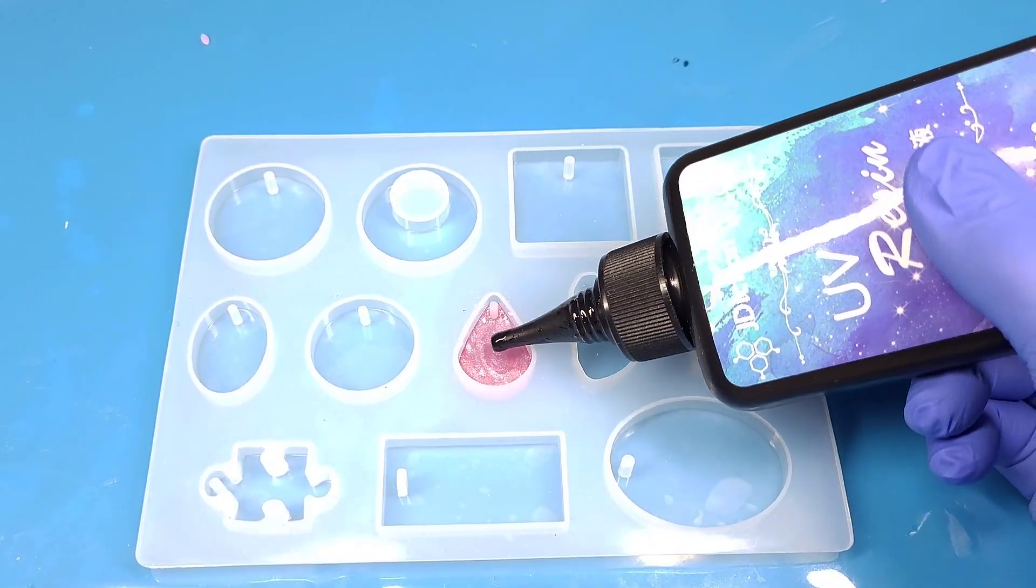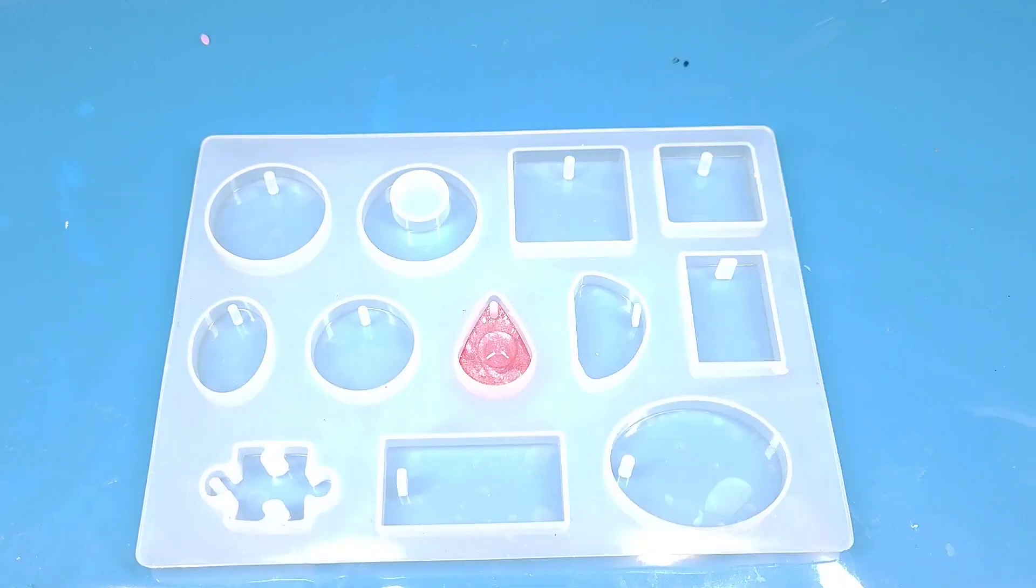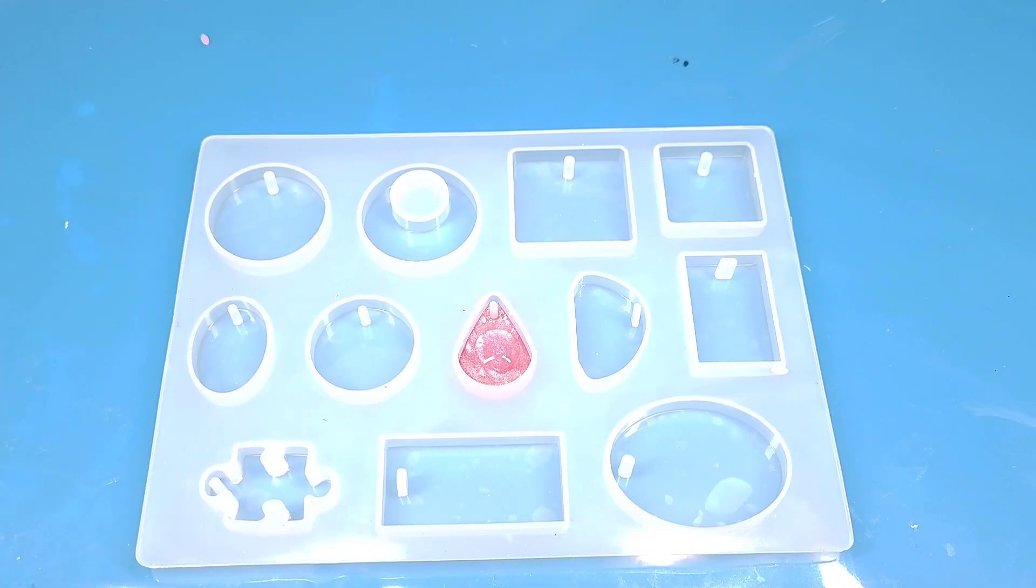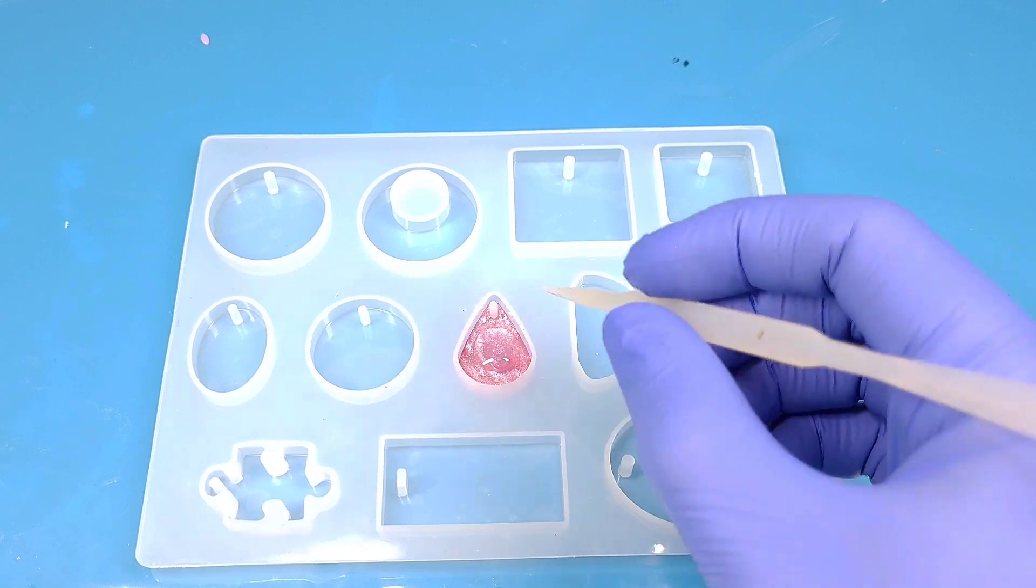For the second layer, we need another drop of resin. Make sure you fill the whole silicone mold with it.